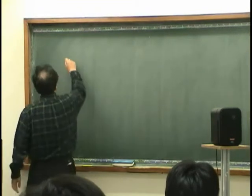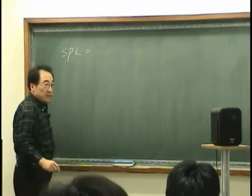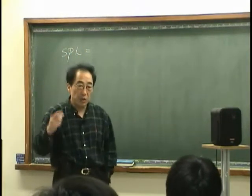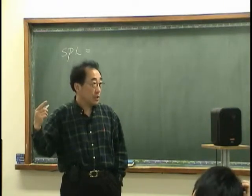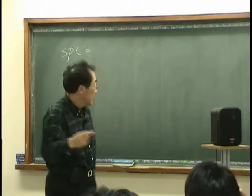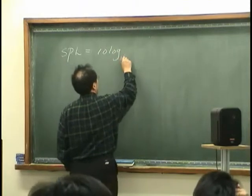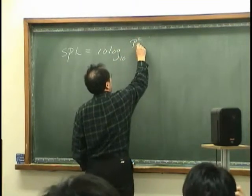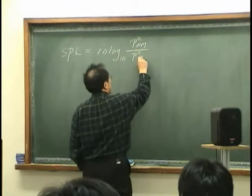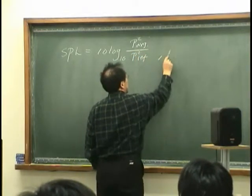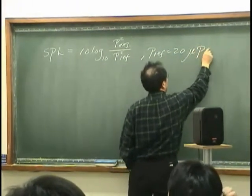In that sense, we learn the sound pressure level that measures the magnitude of sound pressure. It's defined as 10 log 10 average sound pressure square, and the square of the reference pressure. The P reference is 20 micropascal.